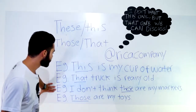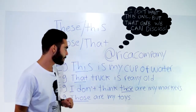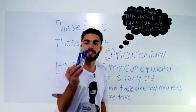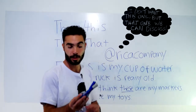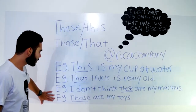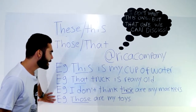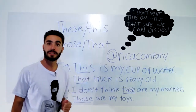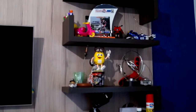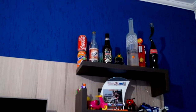Example number three: I don't think these are my markers. Eu não acho que estas são as minhas canetas. Por que eu usei o these? Primeiro, porque eu tenho dois e estão perto. Example number four: Those are my toys. Vamos supor que eu tenho uma pilha de brinquedos e falo — those are my toys. Aqueles são os meus brinquedos. Tem mais que um e eles estão longe, não estão perto. Os brinquedos estão ali em cima. Exactly!